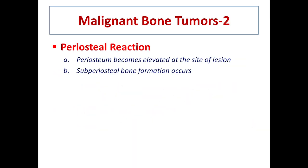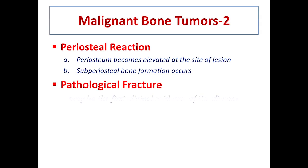Periosteal reaction in malignant tumors may be sunburst, Codman's triangle, or sometimes bubble-like, with periosteal bone formation occurring. As in osteomyelitis, due to osteolysis and weakening of the bone there are chances of pathological fracture.